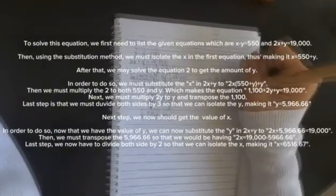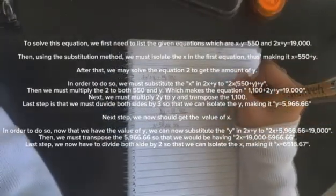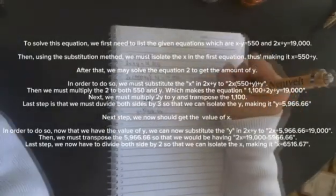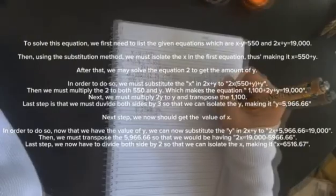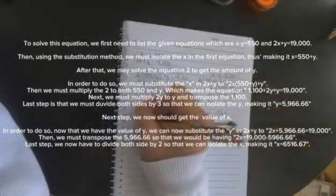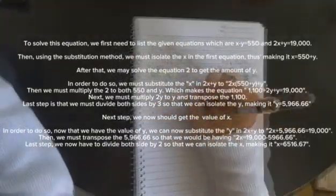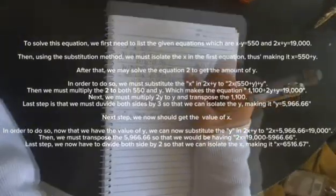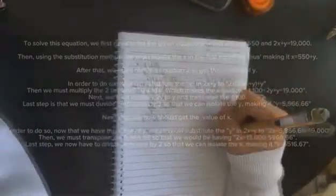Next, we get the value of x. Now that we have the value of y, we substitute y into 2x plus y: 2x plus 5,966.66 equals 19,000. Then we transpose 5,966.66 to get 2x equals 19,000 minus 5,966.66. Last step — we divide both sides by 2 to isolate x, making x equal to 6,516.67.